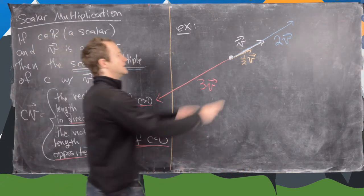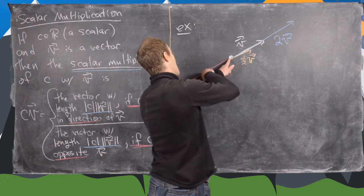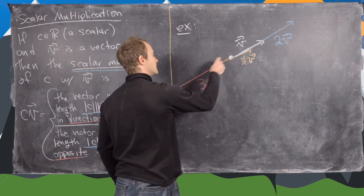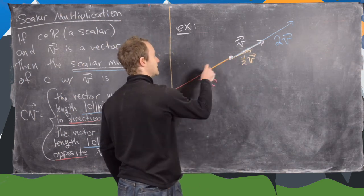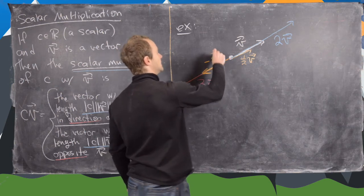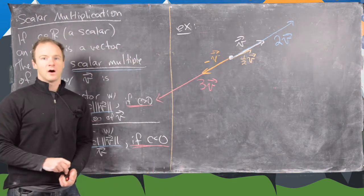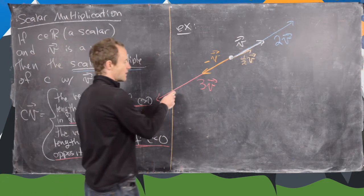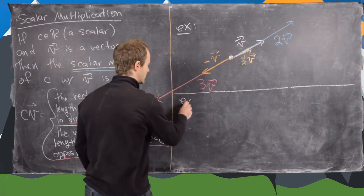And then maybe one more. What if we just have straight up negative v? So that will be in the opposite direction with exactly the same length. So this would be negative v. So now let's go ahead and look at a concrete example.